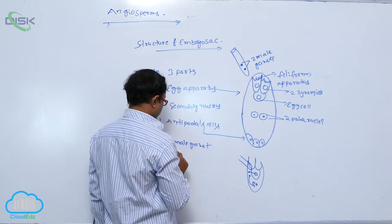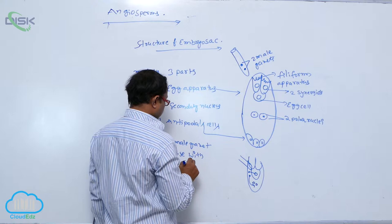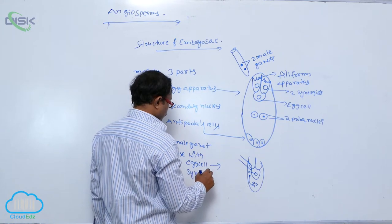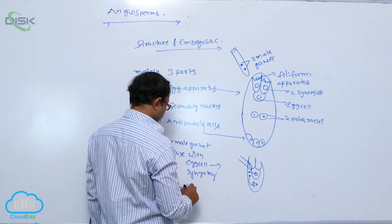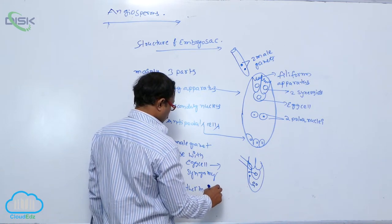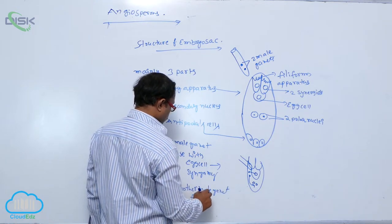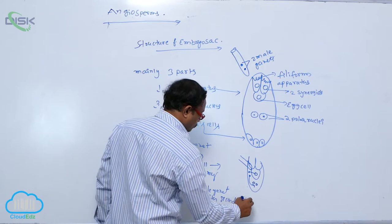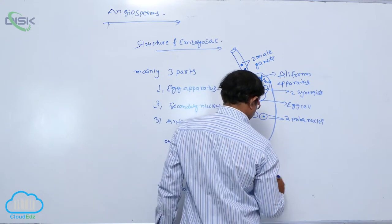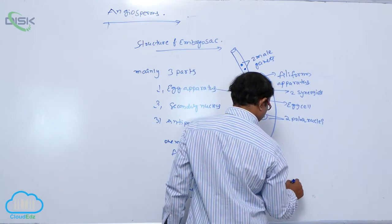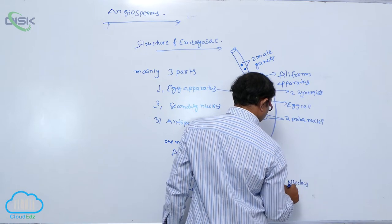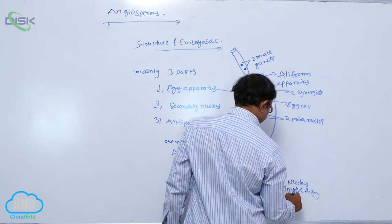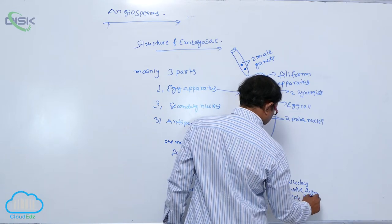One male gamete fused with the egg cell — that is known as syngamy. Another male gamete fused with the secondary nucleus. Three nuclei are involved in fusion. That is known as triple fusion.